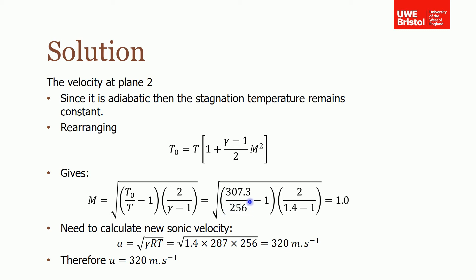Put in all the other values of gamma, and working it out gives a Mach number of 1. So we know the flow at this point is sonic.